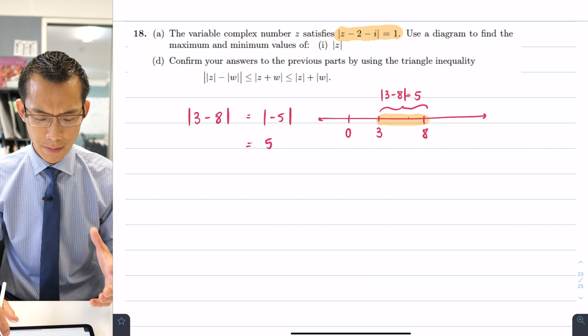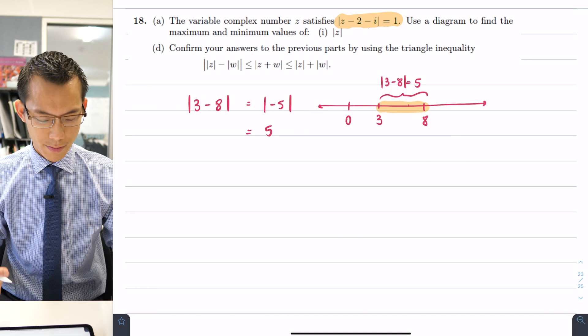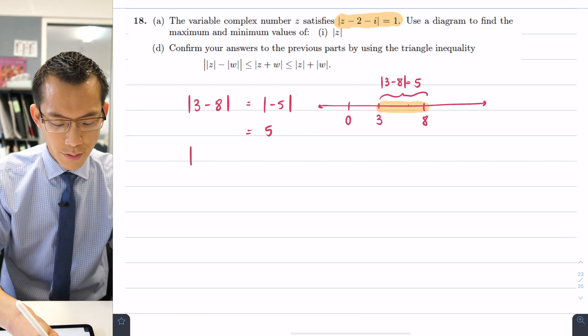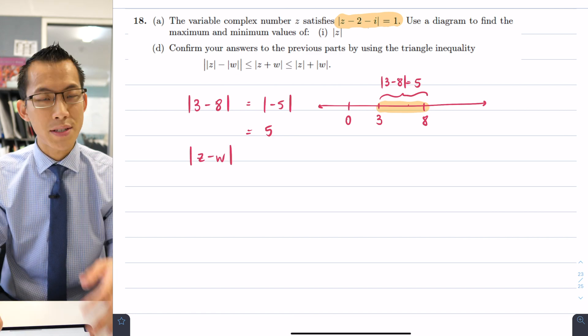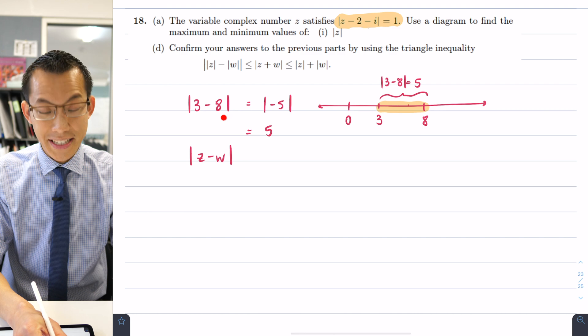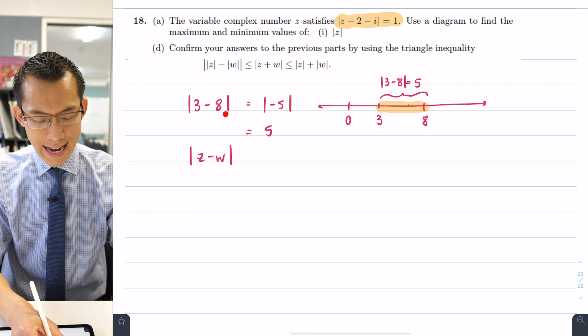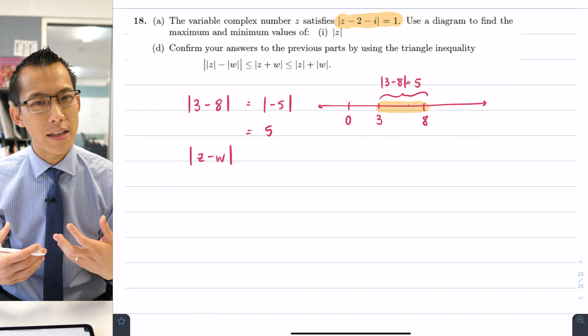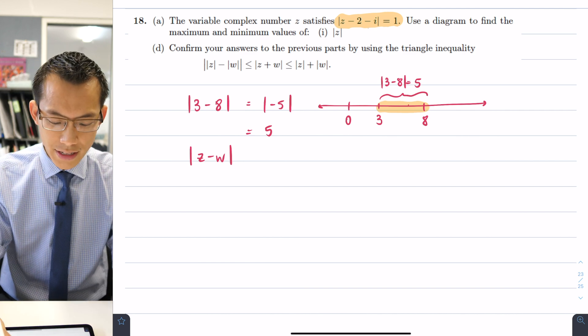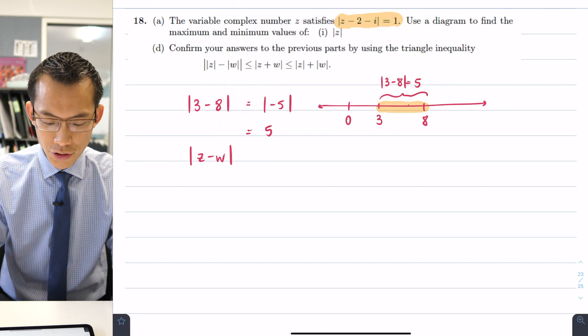So if that's the way it works in real numbers how does it work in complex numbers? Well if I say to you what's the absolute value of z take away w in the same way that this is the distance between 3 and 8, this is the difference between z and w it's just that now we're thinking in two dimensions. If you go back to this idea very fundamentally of the modulus,